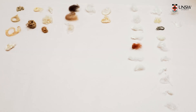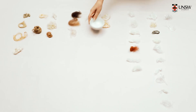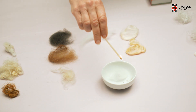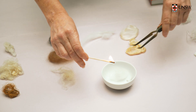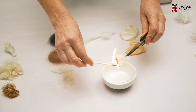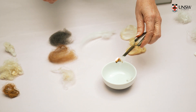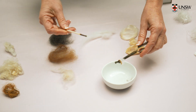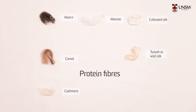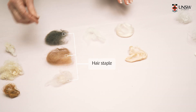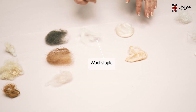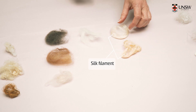Protein fibres are the ones that come from animals — usually hair, with the exception of silk. When you burn these fibres, they smell like burnt chops. The protein samples we have include hair from different animals: alpaca, camel, and cashmere. We have wool from sheep in many varieties — this is merino wool, used in the apparel industry. And then silk, which is from silkworms.